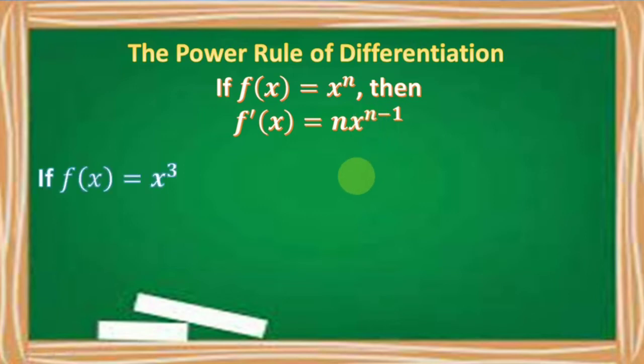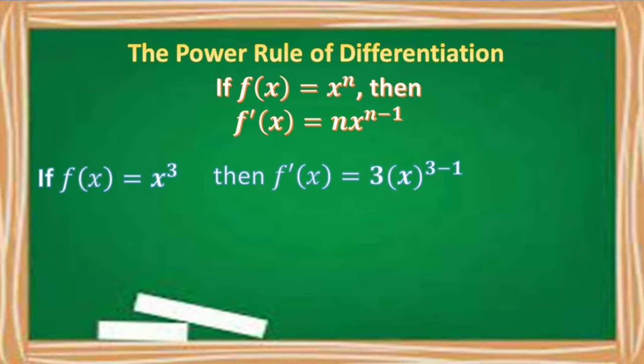For example, if we have f of x is equal to x cubed, then f prime of x or its derivative is equal to 3 times x raised to 3 minus 1.